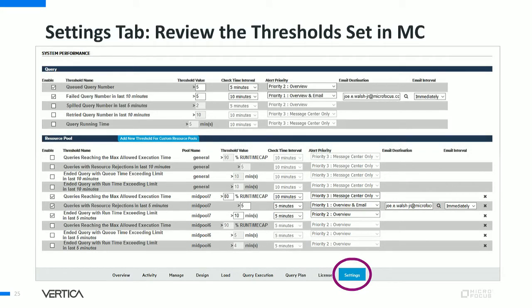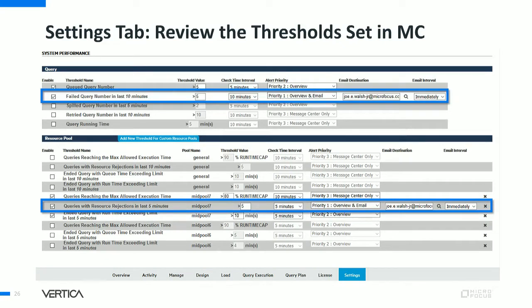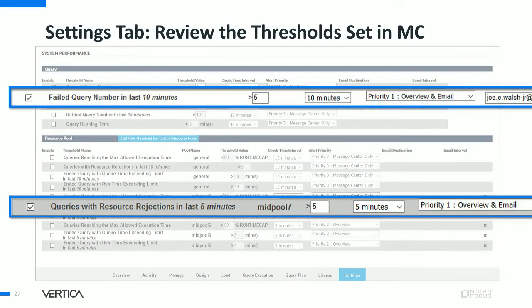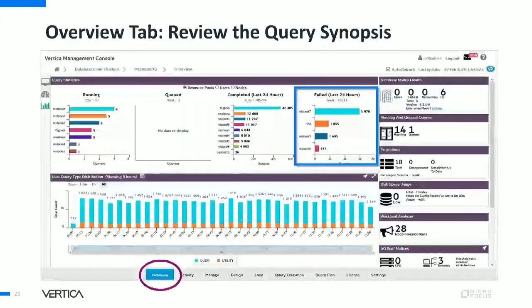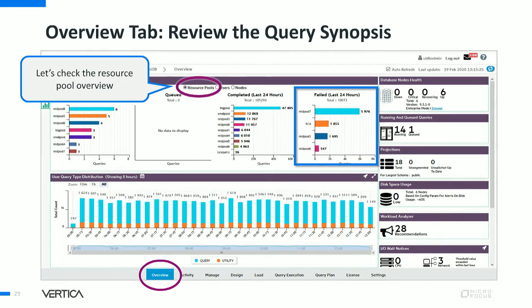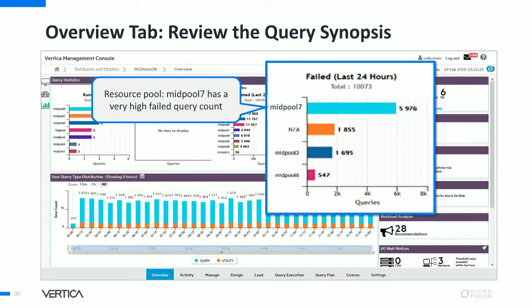Before going into deep investigation, let's review the threshold settings on MC. We have thresholds set under the database settings page: failed queries in the last 10 minutes greater than 5, and MC will send an email if triggered. We also have a threshold alert for query resource rejections in the last 5 minutes for mid-pool 7, set to greater than 5. There are various other thresholds on this page you can configure. Now let's triage those email alerts. On the query statistics page under the database overview, looking at the resource pools graph for failed queries per pool, we see about 6,000 failed queries for mid-pool 7 in the last 24 hours.